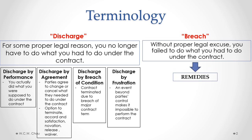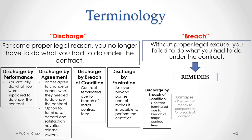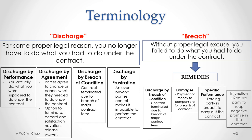Another term that we'll be using is remedies. When we do have a breach of contract, the innocent party — the person who did not breach the contract — can sue for breach of contract and seek a remedy from the court. This is some kind of redress that the court will give to the innocent party. The types of remedies we will examine include damages, which is the most common, and then specific performance and injunction.